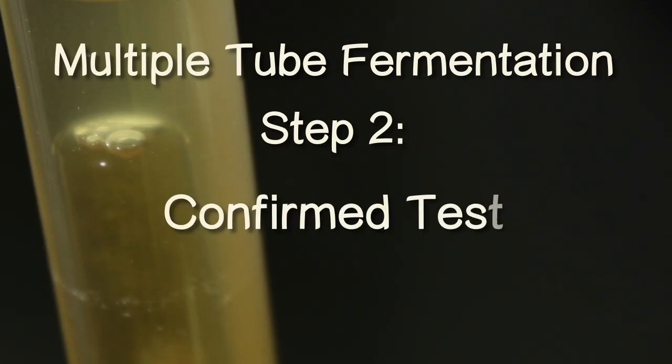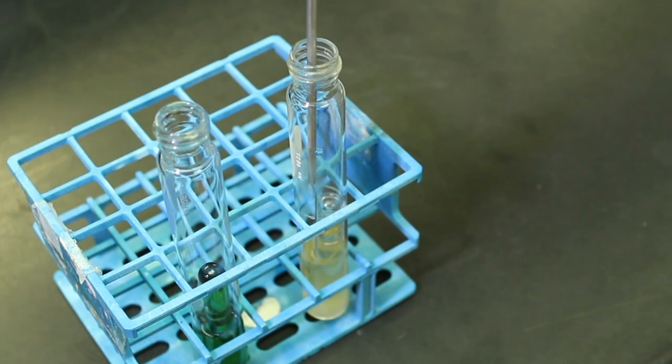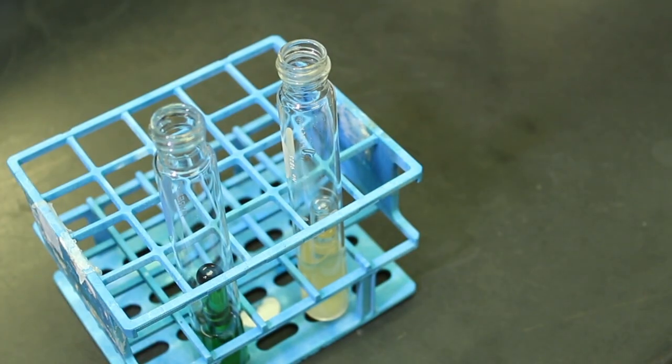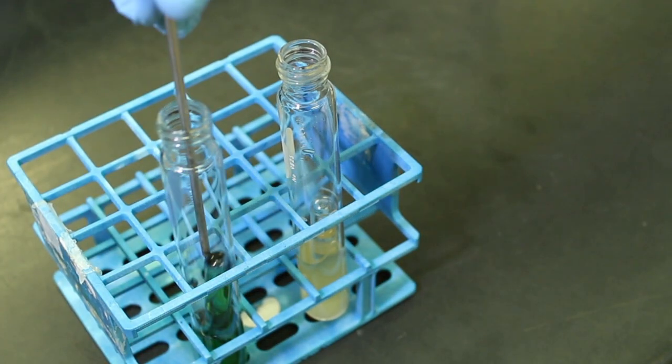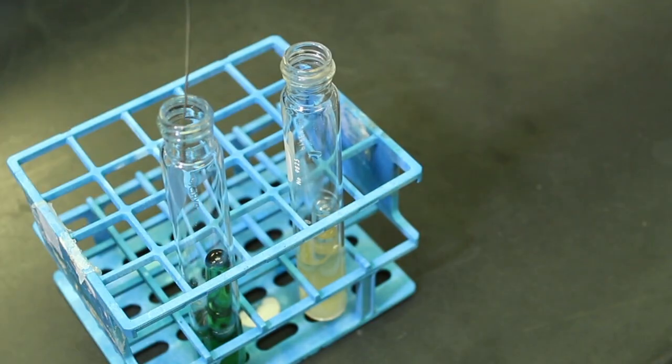A sample from each positive presumptive test tube is then transferred into a new test tube containing more sugar and another ingredient, brilliant green bile.